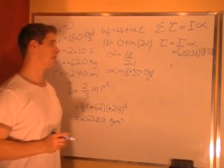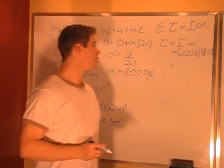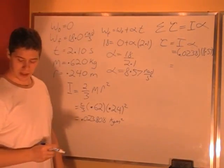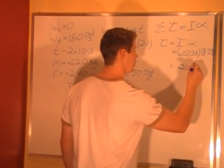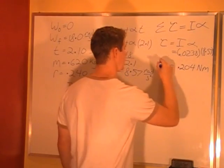Multiply those two numbers together, making sure we keep enough numbers for significant digits. And we get 0.204 N·m.